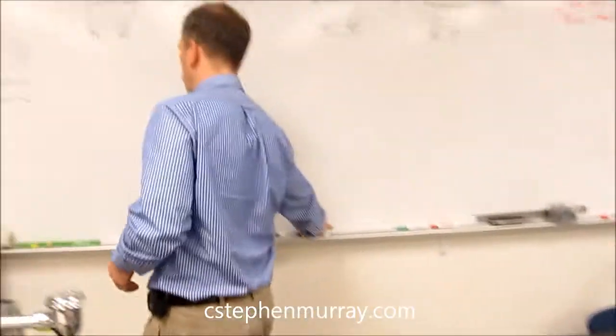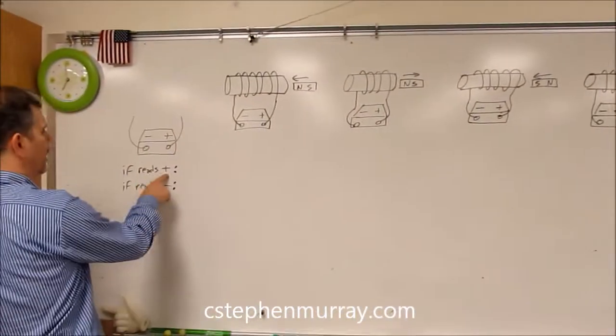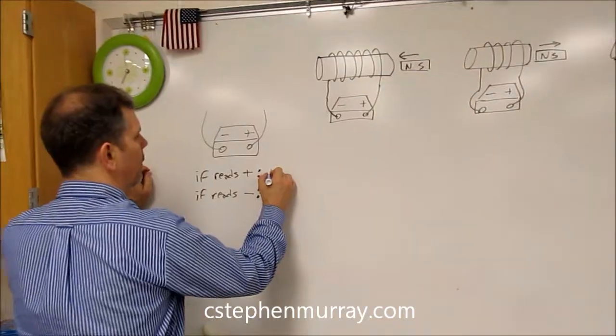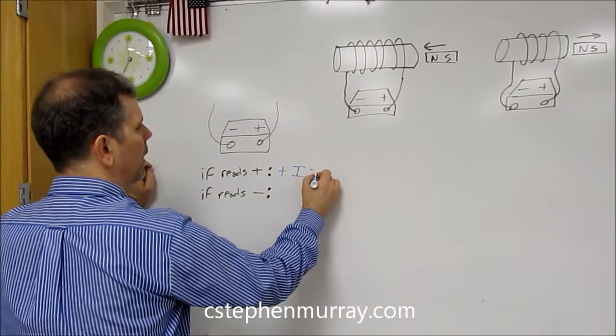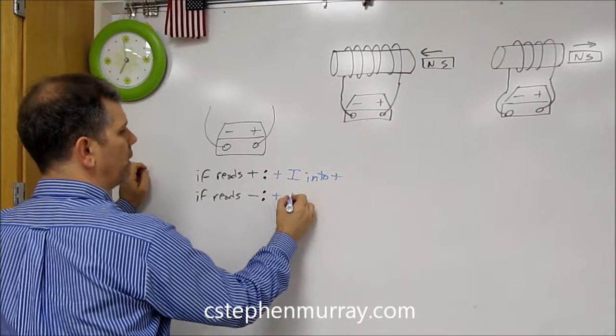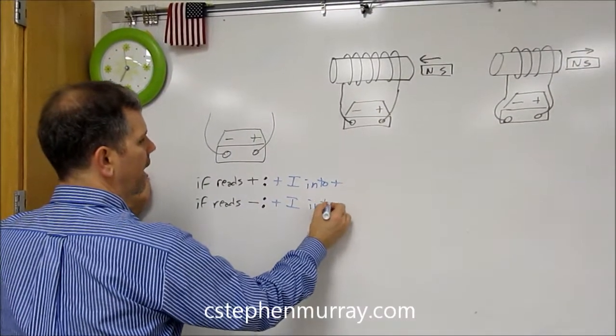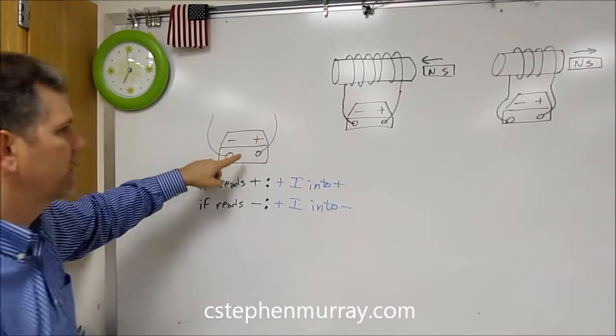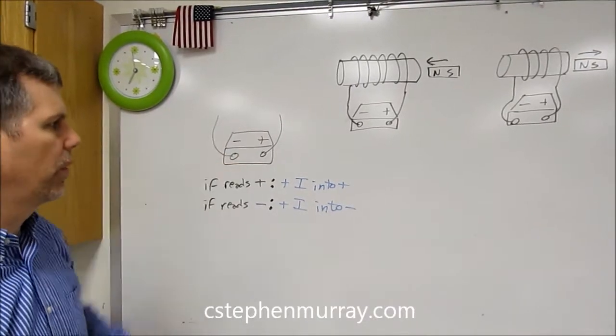So up here on the board, I'm going to write this down. Now, if it reads positive, then positive current into the positive terminal. If it reads negative, then the positive current goes into the negative side. That's all it's telling us, is which side the current is flowing in or out.